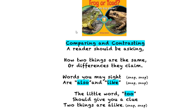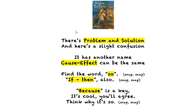Comparing and contrasting — a reader should be asking how two things are the same or differences they claim. Words you can cite are 'also' and 'alike.' There's problem and solution, and here's a slight confusion — it has another name; cause and effect can be the same. Find the word 'so,' 'because of' is the key.